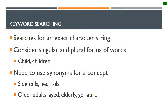In keyword searching, you're searching the exact character string that you type into the search box. It searches in the title, abstract, and subject heading position of the record. You need to consider the singular and plural forms of words when you do this type of search, and you also need to think of synonyms for each concept.